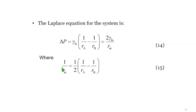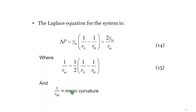For the soap film between two wire loops, R_A lies on the convex side and takes a negative value, while R_B lies on the concave side and takes a positive value, so R_A = −R_B. The Laplace equation for this system is equation 14: ΔP = γ_LA(1/R_A + 1/R_B), where the mean curvature 1/R_M = ½(1/R_A + 1/R_B).